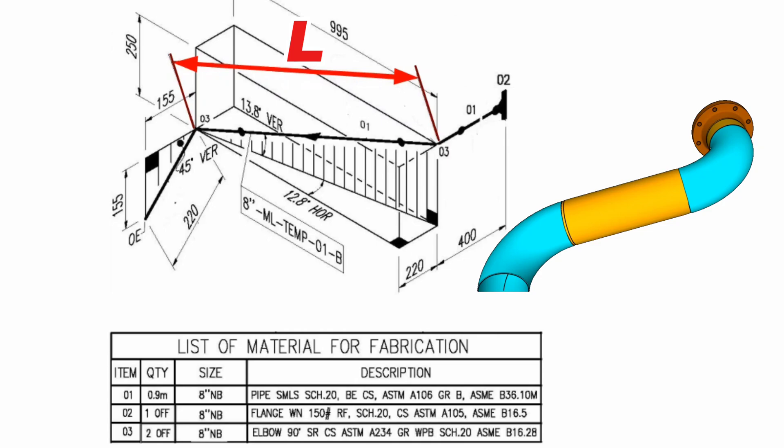Let's first learn the bill of materials of this pipeline. This table contains the list of materials required for the fabrication of the pipeline in this pipe drawing.